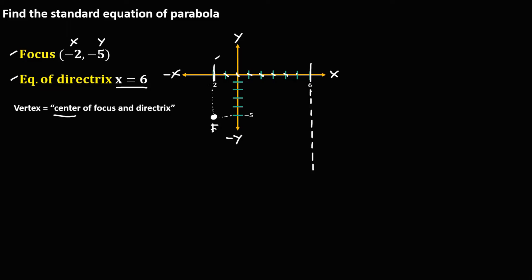Continuing: 6, 7, 8. So the total count is 8. Since we need to find the center, we divide by 2: 8 divided by 2 equals 4. Then we count 4 units from the focus to find the center.